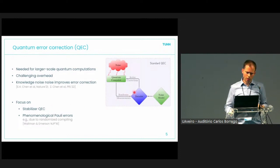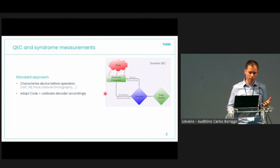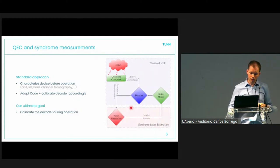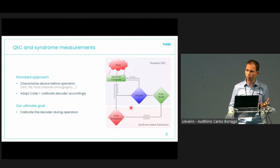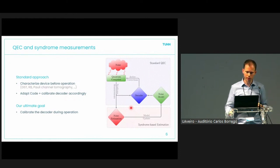I will focus on stabilizer codes and quantum memory — basically a phenomenological noise model with just Pauli errors. When we want to get an estimate of such a noise model, what you usually do is characterize the device before operation and then adapt your decoder correspondingly. The ultimate goal would also be to calibrate the decoder during operation — that's the far-term goal. It's not what I achieve today, but we are taking a good first step in that direction.